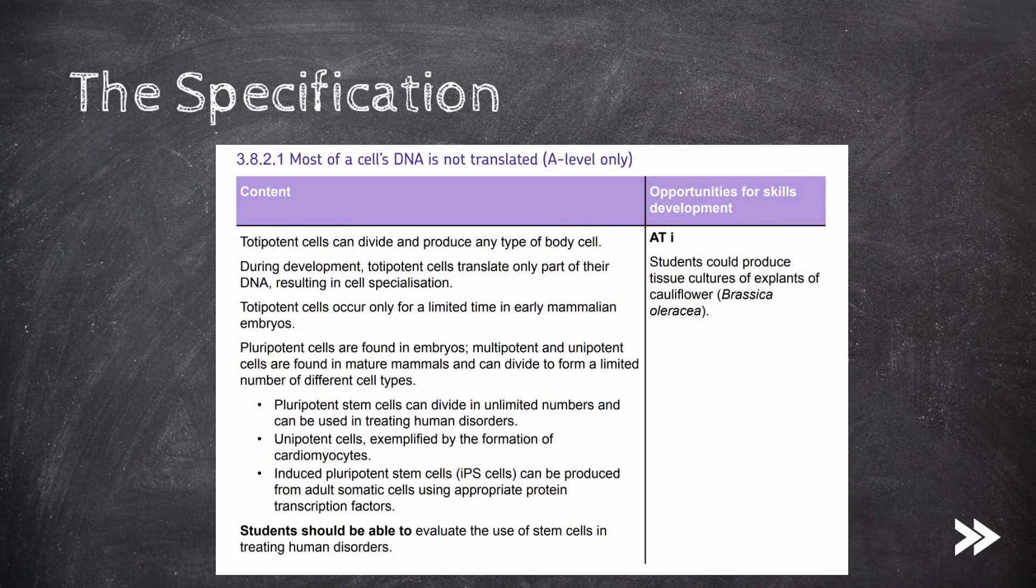Great, that would be this part of the specification covered. We have covered totipotent cells and how they, during development, translate only part of their DNA, resulting in cell specialization. We have covered how totipotent cells occur only for a limited time in early mammalian embryos.